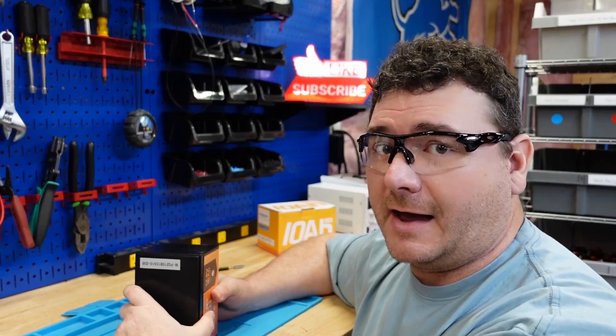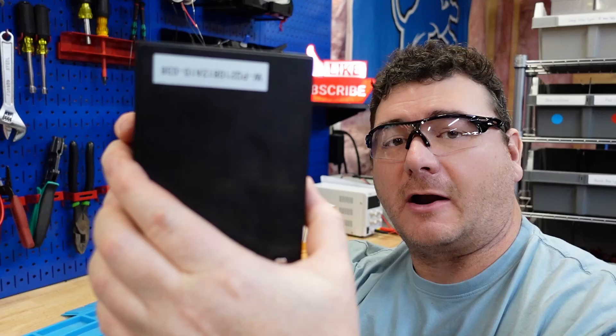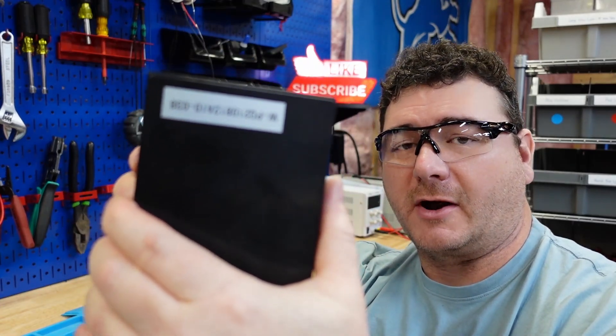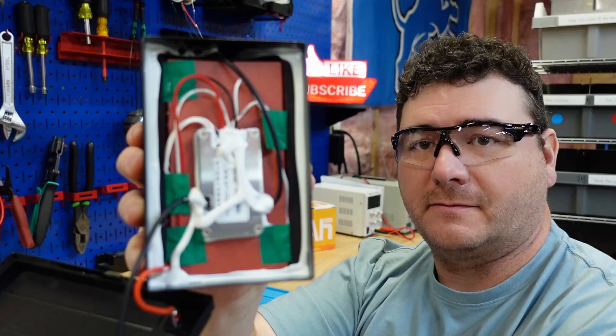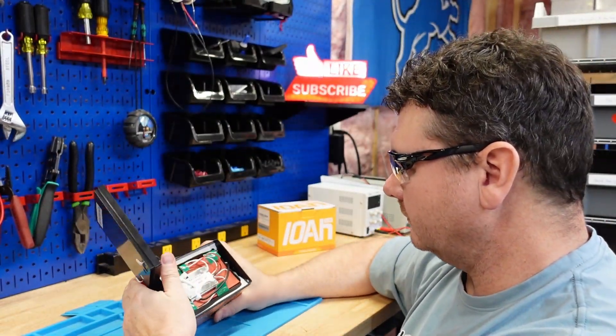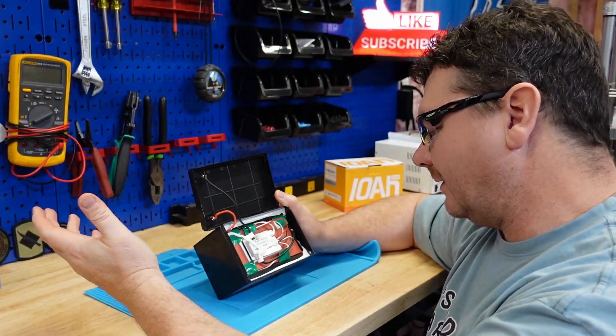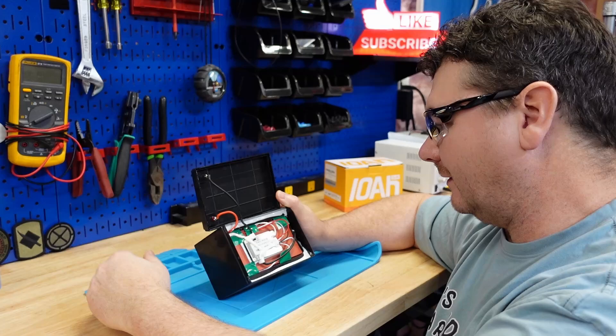So obviously that was not sealed up very well, didn't take much at all. Power Queen 10 amp hour lithium iron phosphate battery, first look. It's got bathroom caulk in it, which isn't a bad thing for a battery I guess, it's just kind of a pain in the butt for me.